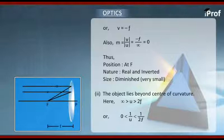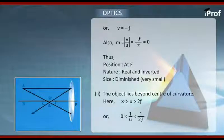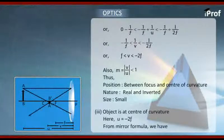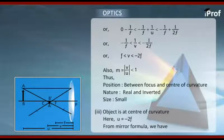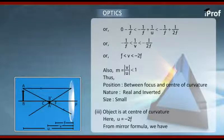Now we move to the next case when we take object beyond center of curvature. Let's try to retrace its image. Our object is denoted by A and B. B is the arrow tip. We would like to find out the image of point B. This extended object can be considered as a collection of large number of points.